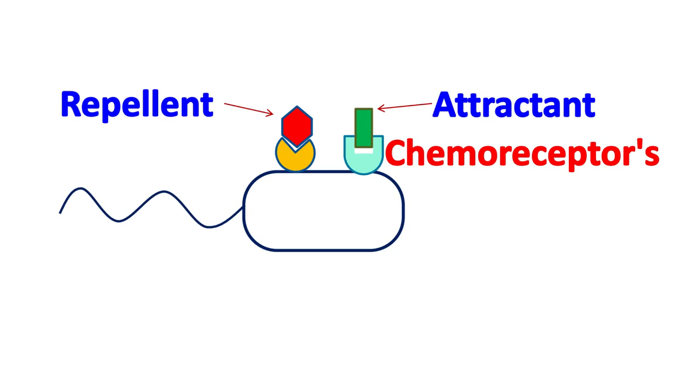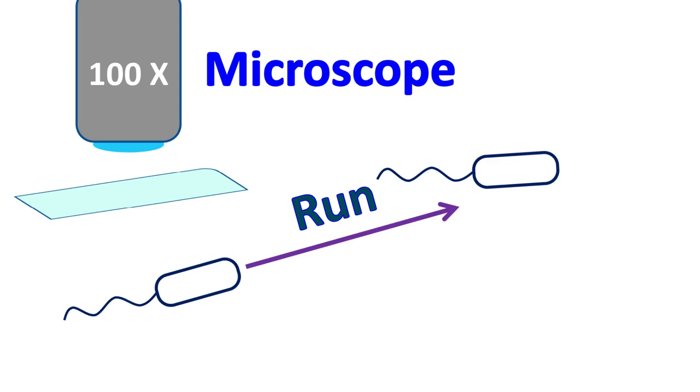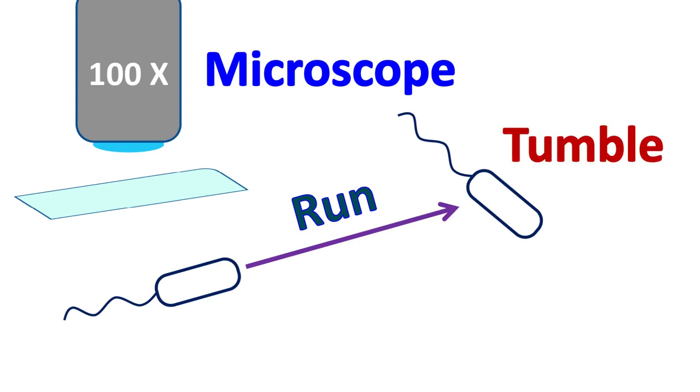When a chemotactic cell is observed under the microscope, two types of motion are observed. Number one, the movement of cells which is called a run, and number two, a short period of pause where the cell reorients itself before moving further, which is called a tumble.